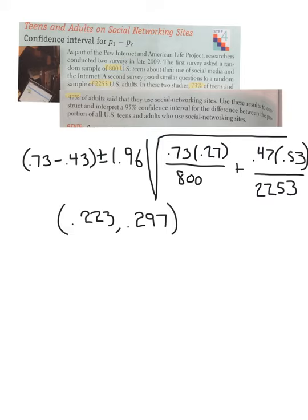And this is what we get in the end. These two numbers, after cranking out all these numbers. So, what does this tell us? We are 95% confident that the true difference between adults and teens who use social networking sites is somewhere between 22% and 29%. Wango. There it is.